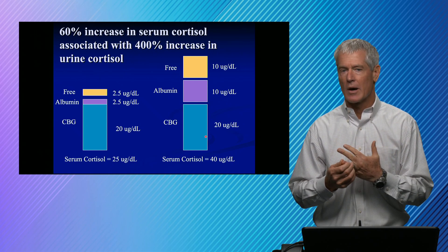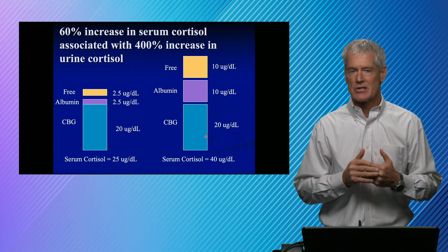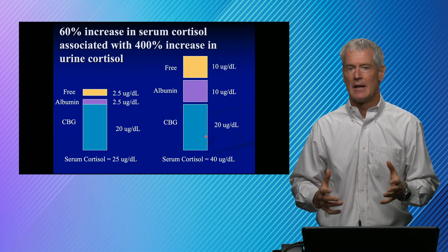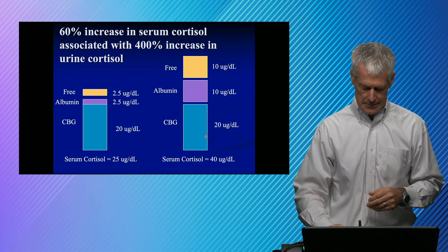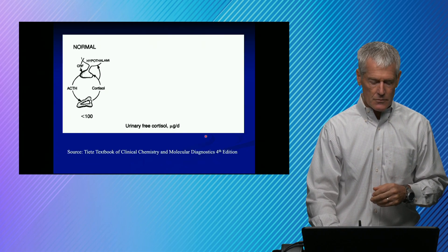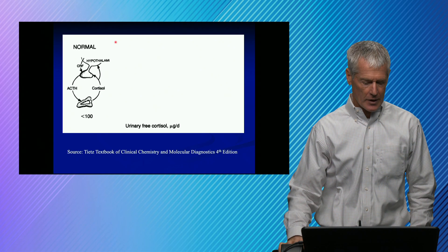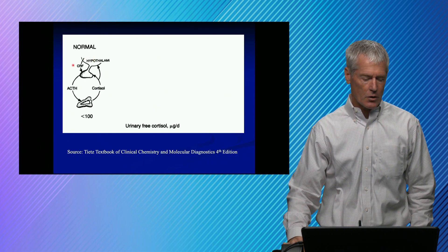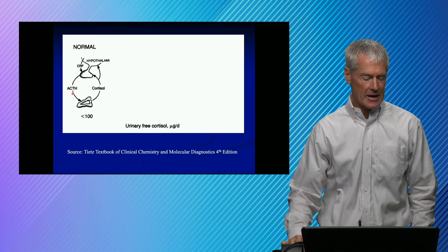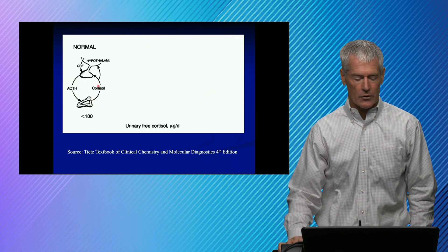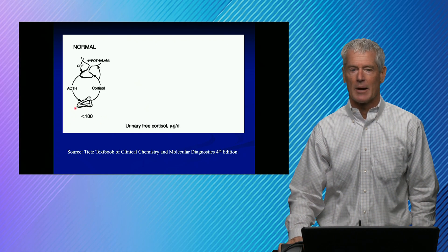The problem with urinary free cortisol is that you have to do a 24-hour urine collection, and those are sometimes not done very well — people forget to collect, miss part of the collection, and that throws off your calculations. In a normal person, the hypothalamus secretes corticotropin-releasing factor, which acts on the pituitary, which releases ACTH, which acts on the adrenal gland, secreting cortisol, and we stay in balance. When that's the case, urinary free cortisol is less than 100 micrograms per day.